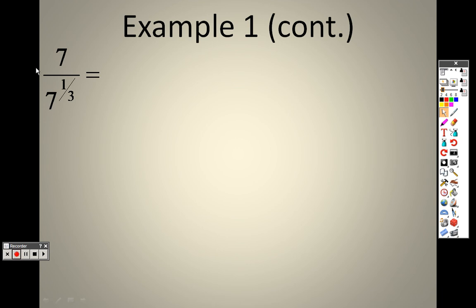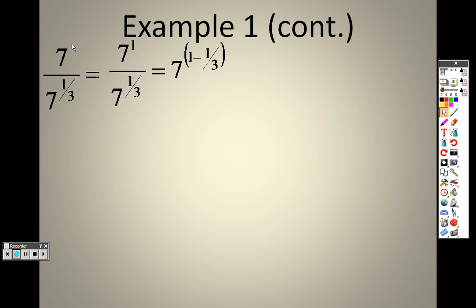Now when we're doing this with example 1 — we are on 7.2, properties of exponents dealing with rationals. Now that I have a division sign there, that means I have to subtract them. Well, this is like saying 7 to the first power.